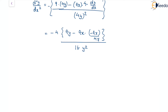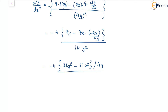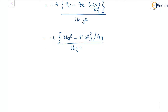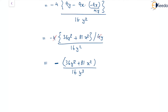After rearranging, this becomes minus 4 times (36y² + 81x²/4y) divided by 16y². Further simplification gives d²y/dx² equal to minus (36y² + 81x²) divided by 16y³.